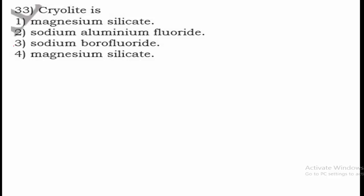Question 33: What is cryolite? Cryolite is used in the extraction of aluminum by the Hall-Héroult process. Its addition decreases the melting point of molten aluminum and increases the conductivity of the solution. Its chemical formula is Na3AlF6, so it is sodium aluminum fluoride. Option 2 is the right answer.